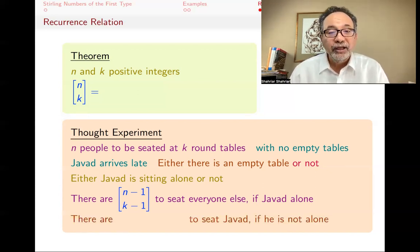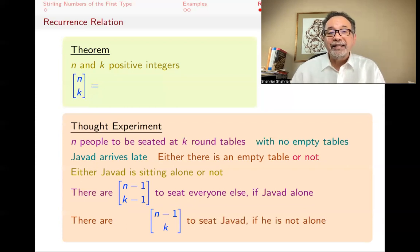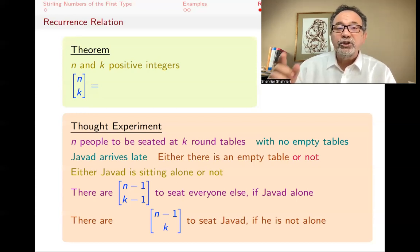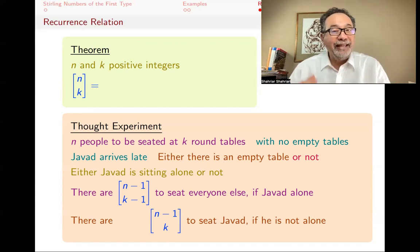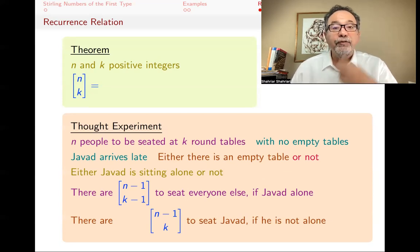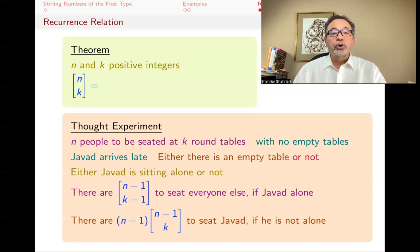But what if Javad is not alone? Well, that means that when Javad came and all the k tables are taken, someone is sitting at them. So first of all, how could we do that? How we could seat n-1 people around k tables? And the answer is [n-1, k]. But now Javad comes. What is he going to do? Well, our instruction to Javad is going to be, go to right, go sit to the right of blah. And blah could be anyone. So any, and that's a very good instruction. If you say, go sit next to the right of that person, then Javad knows exactly where to go sit. And if you choose a different person, then that will be a different place, a different configuration. So the number of ways to place Javad is exactly the same as the number of people who are already sitting, because we're going to tell Javad to go sit to the right of one of them.